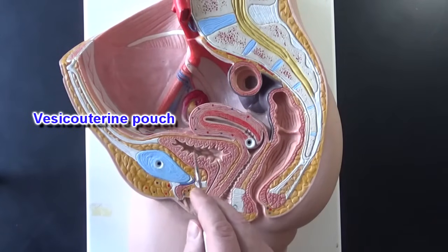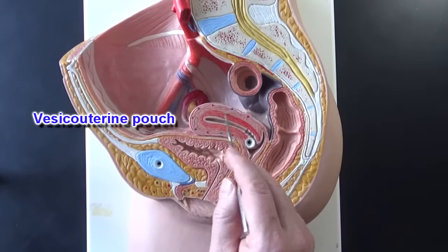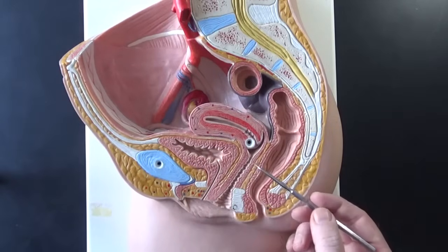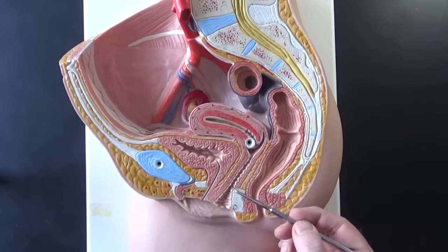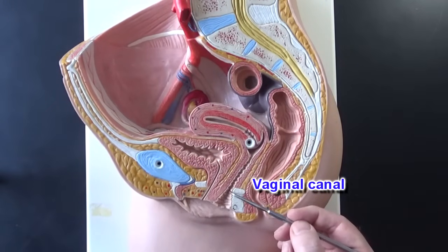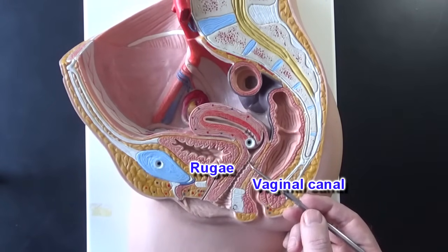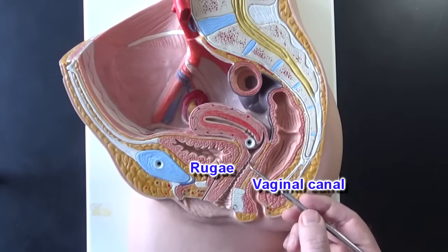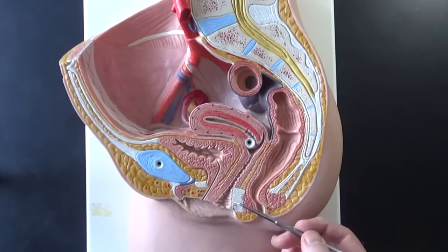Vesico for the urinary bladder and uterine for uterus. This structure right here is the vaginal canal and you can see the ruga here — there are folds on this inner membrane to allow this area to expand.